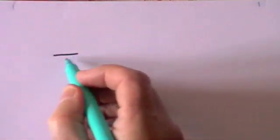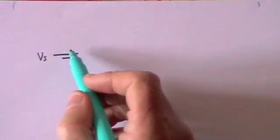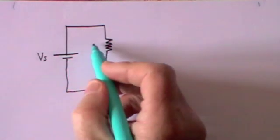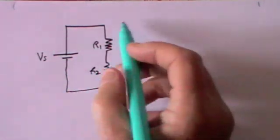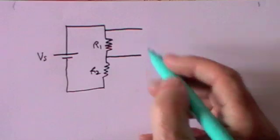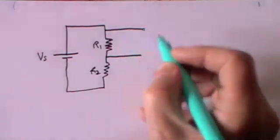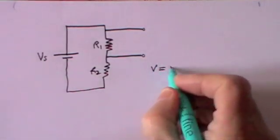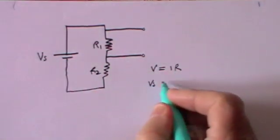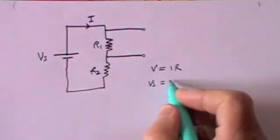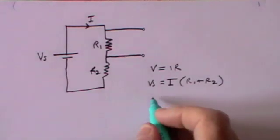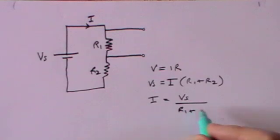Now I want to talk about a potential divider. We have a battery as our source voltage Vs, and we take that battery across two resistors in a complete circuit — R1 and R2. Ohm's law always applies: V equals IR. For the entire circuit, the voltage is Vs, the current I flows, and the total resistance is R1 plus R2. That means the current is equal to Vs divided by R1 plus R2.